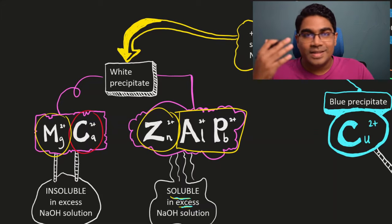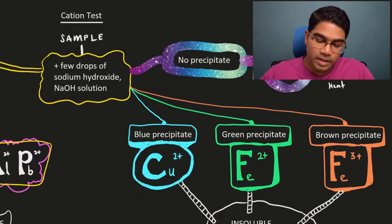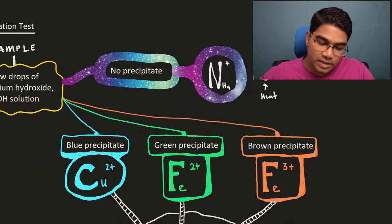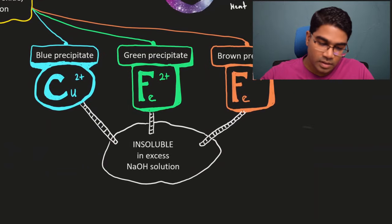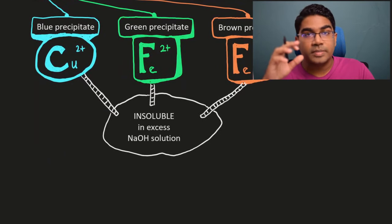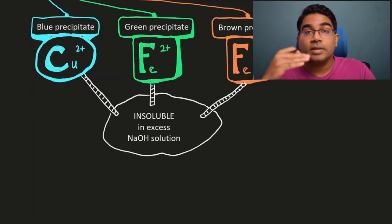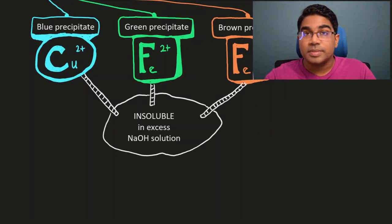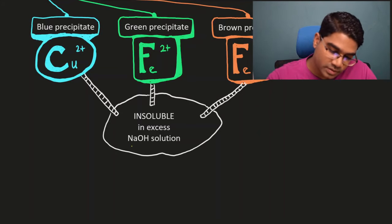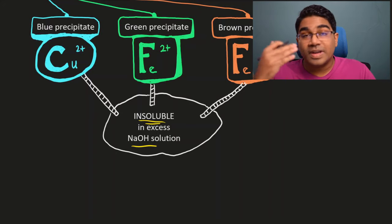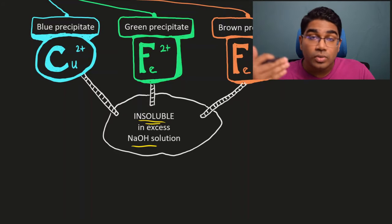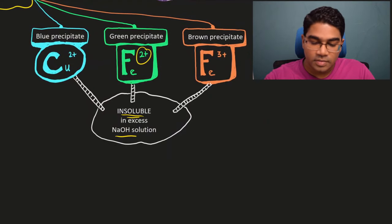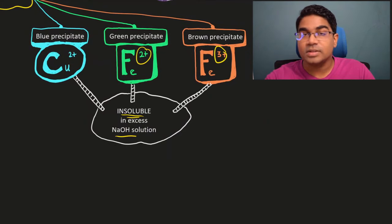Now there is another easier one to identify, and that is the coloured precipitates. When we add a few drops of sodium hydroxide solution, there are three coloured precipitates that can form. The first is blue precipitate — when we have blue precipitate, there are copper(II) ions in the sample. All these coloured precipitates are insoluble in excess sodium hydroxide solution. If you have a green precipitate, then iron(II) ions Fe2+ are present. If there is a brown precipitate, it means we have Fe3+, iron(III) ions in solution.